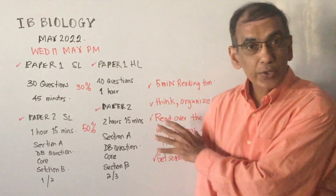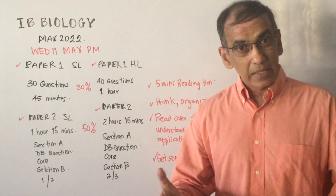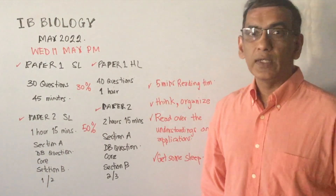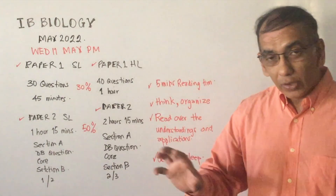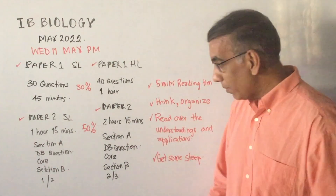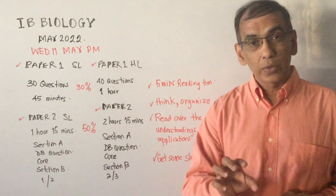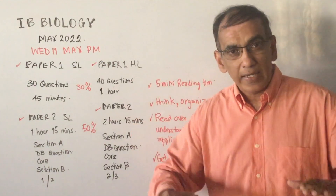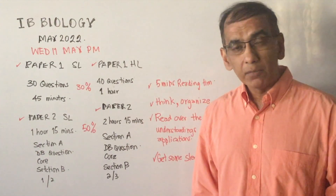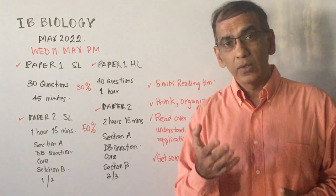When you get your five minutes of reading time, as per IB regulations, I recommend two things: start looking at the data-based question, and also look at the questions offered in Section B to decide which one is best for you and will maximize your score. Start thinking about how you would lay out your answer clearly, because one mark is available for organizing your answer in a way that makes points easily accessible to the examiner.